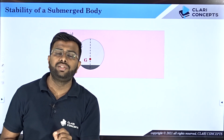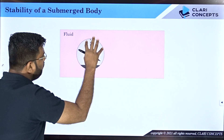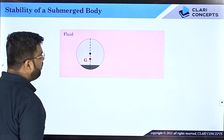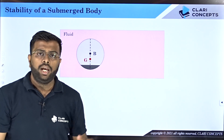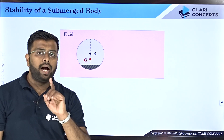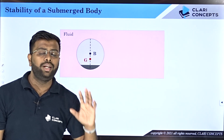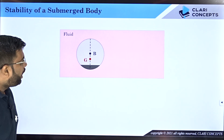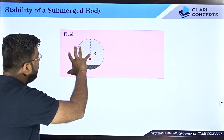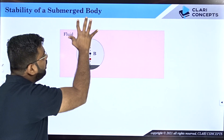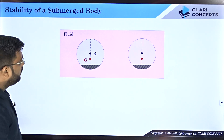If a body is submerged in a fluid medium, it has a self-weight acting at the CG in the downward direction. A completely submerged body also experiences buoyancy force in the upward direction. If you are not familiar with buoyancy force, please review my earlier lecture on that topic. Buoyancy always acts upward at the centroid of the submerged volume. For a completely submerged sphere, the center of the displaced volume is at the geometric center, so the buoyancy force acts at point B, which is the center.